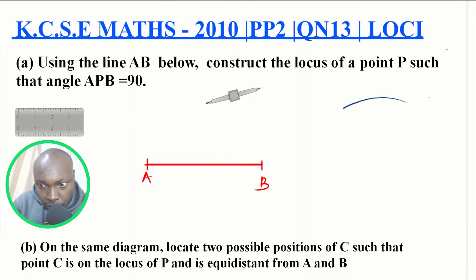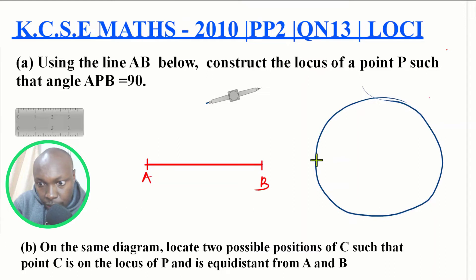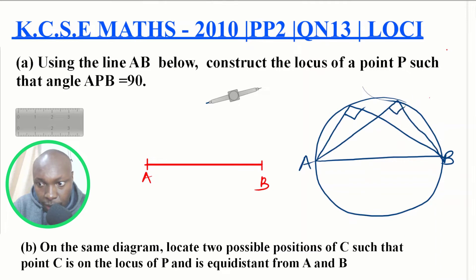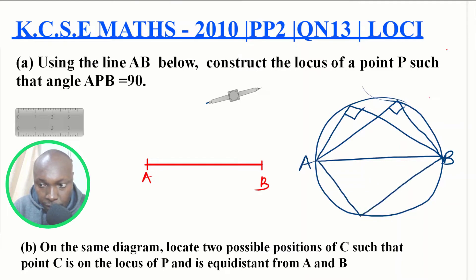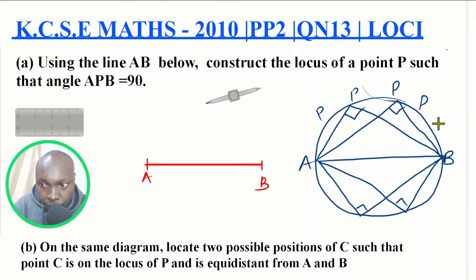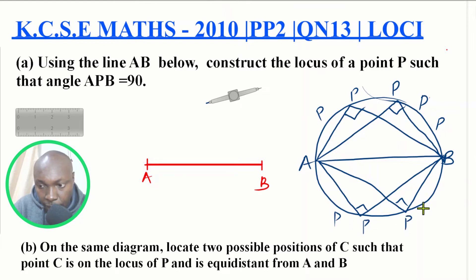Let me explain this using a circle. If you have a circle and AB is the diameter, then according to this property, the diameter subtends an angle of 90 degrees at any point on the circumference — both on the upper side and the lower side of the line. So this diameter will subtend 90 degrees. Therefore, to ensure that angle APB equals 90 degrees, P will lie anywhere on this arc on both sides of line AB.